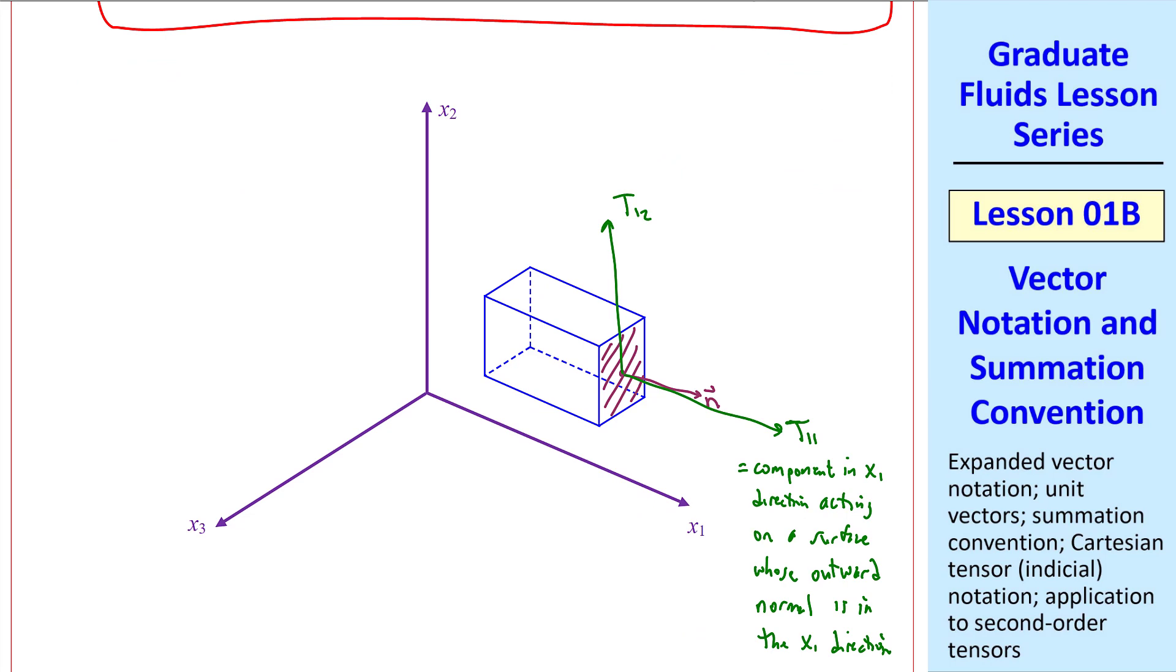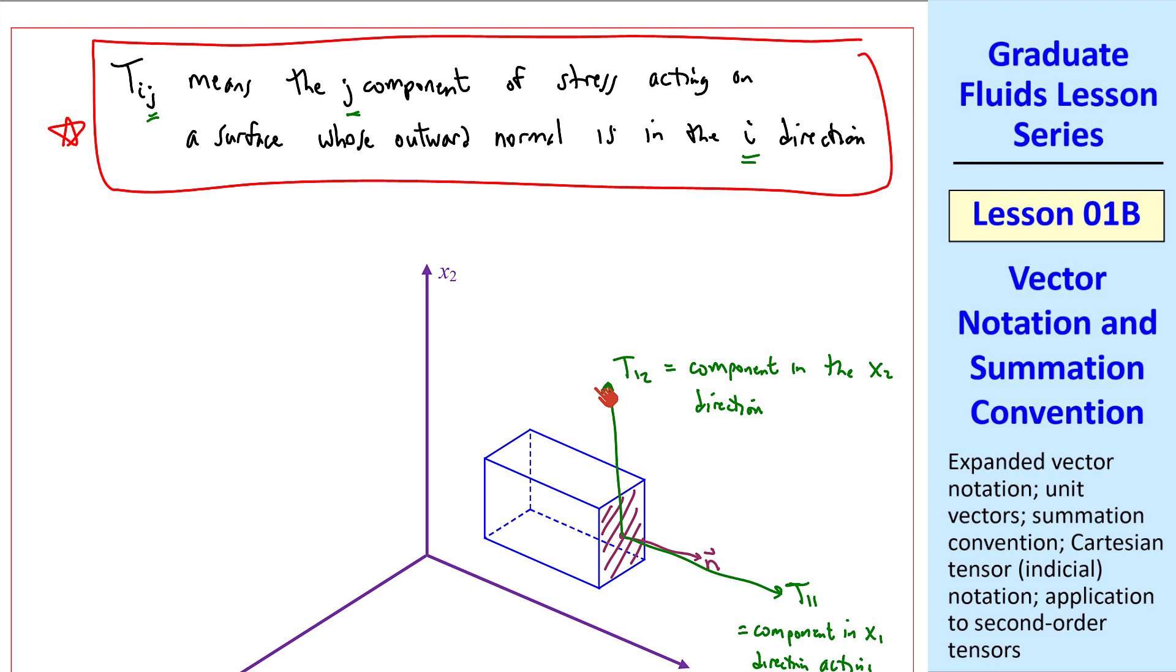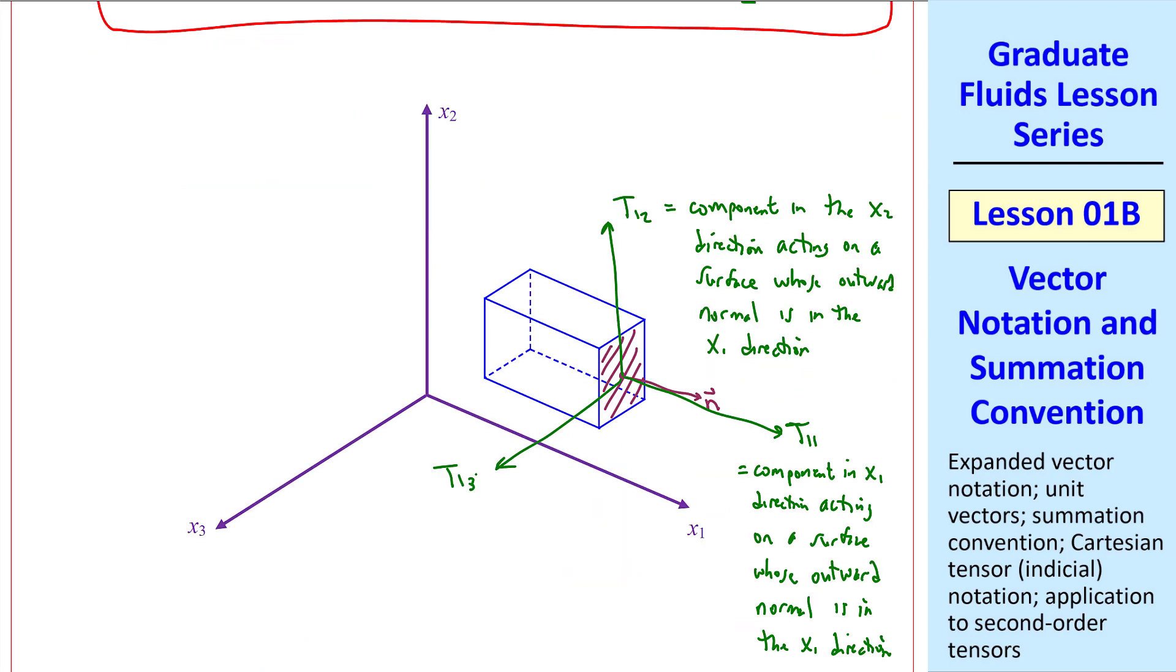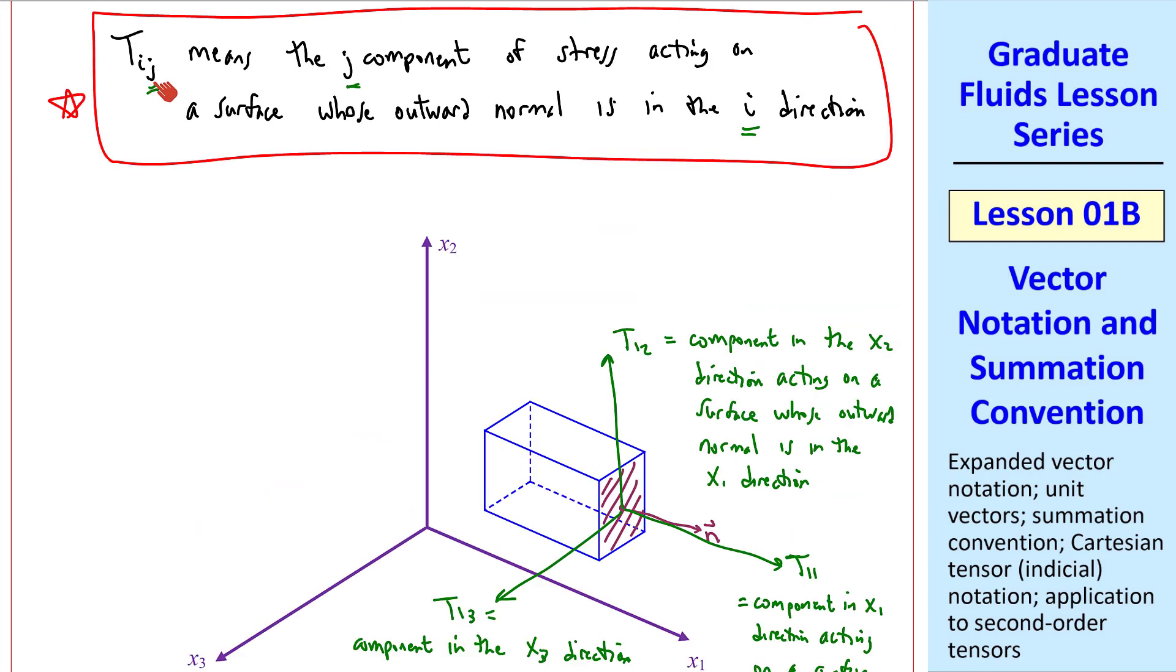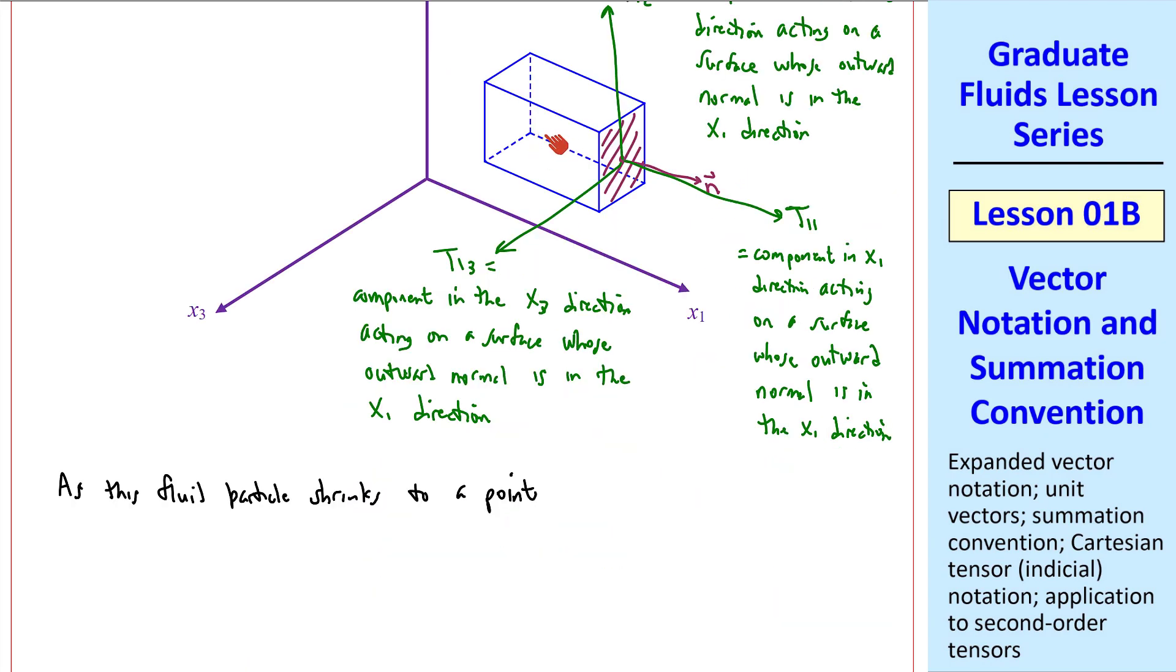Similarly, we define t12 as the component in the x2 direction, the 2 coming from this second index, acting on a surface whose outward normal is in the x1 direction. Finally, t13 on this surface is the component in the x3 direction. Again, the 3 coming from this second index, the x3 direction acting on a surface whose outward normal is in the x1 direction.